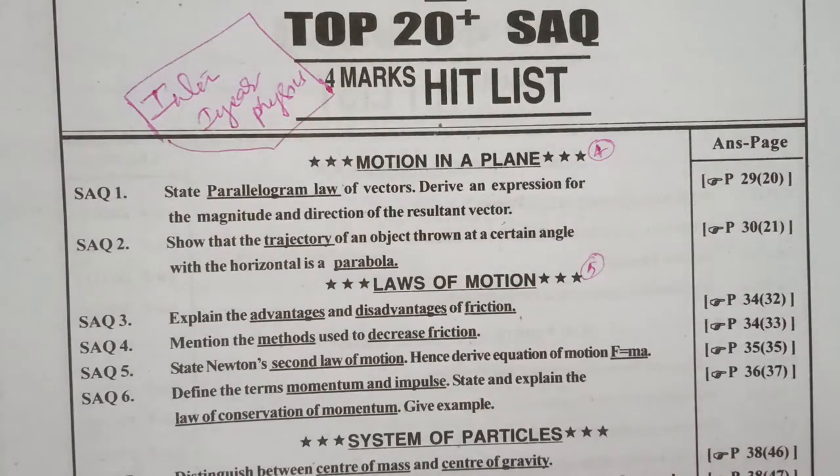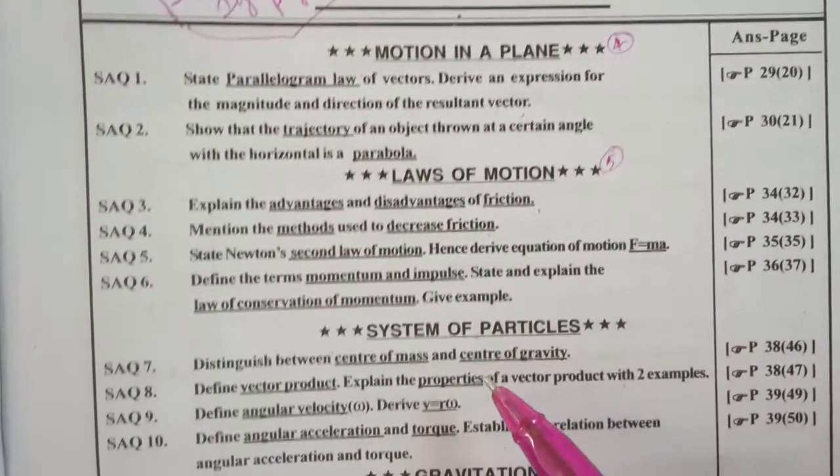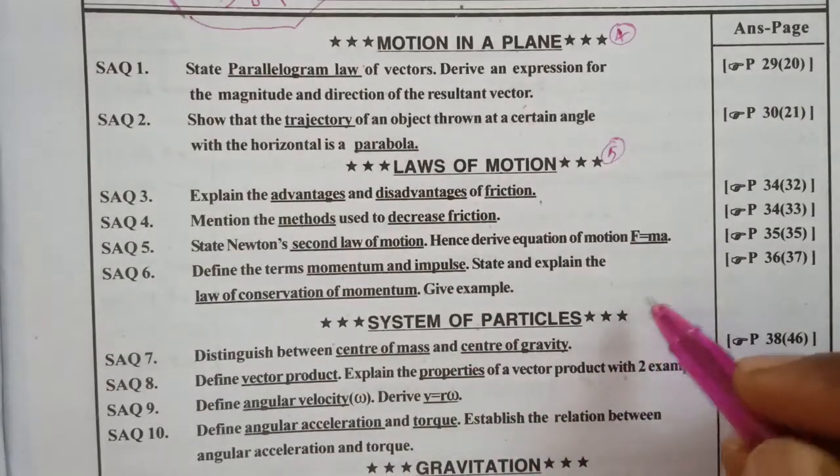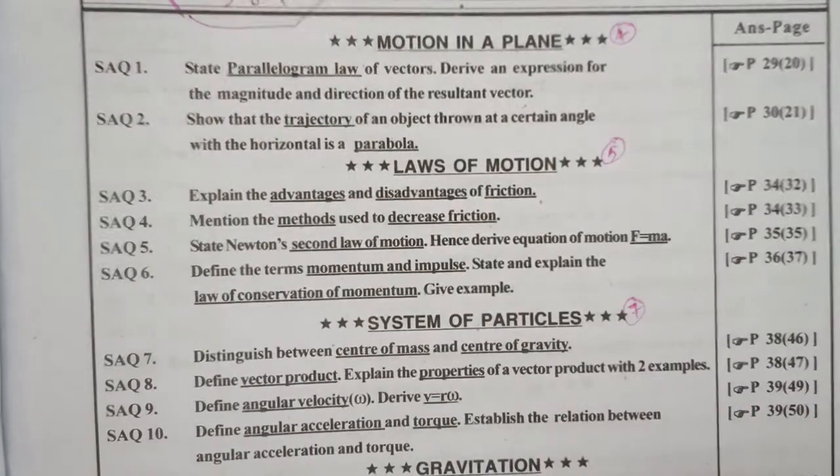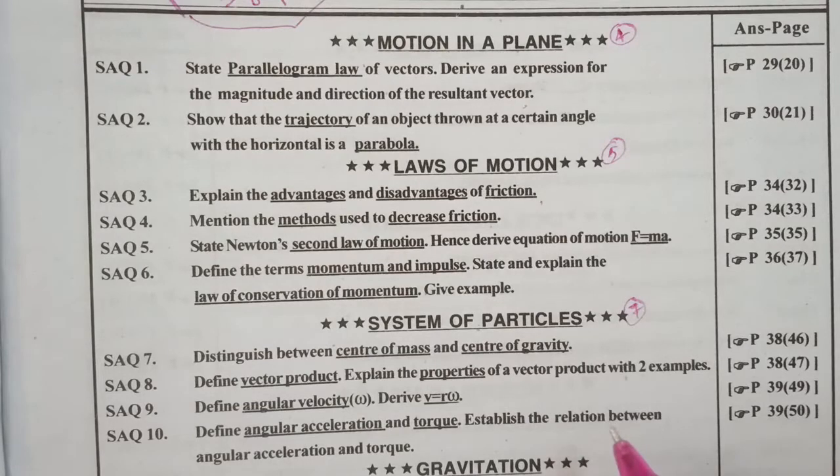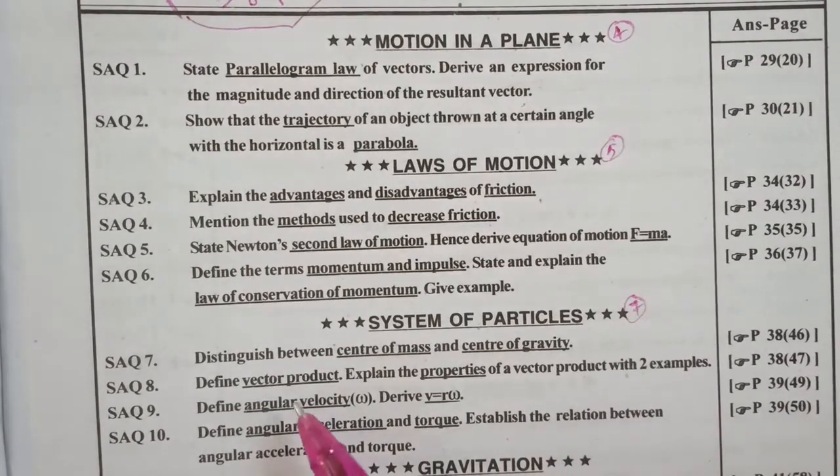Next chapter is system of particles and rotatory motion. This is the seventh chapter according to serial number. Very important and gunshot.